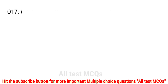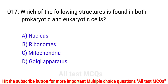Question number 17. Which of the following structures is found in both prokaryotic and eukaryotic cells? The right answer is option B: ribosomes.